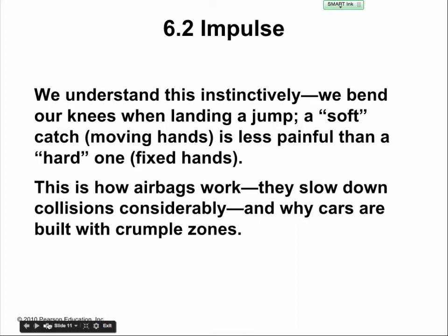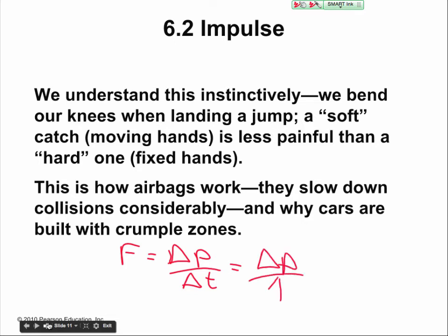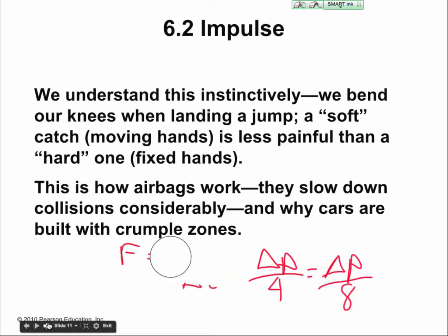Force equals delta P over delta T. When I increase the time, it reduces the force. Whatever delta P is, if I go from delta P over 4 and change that denominator to 8, this is a lot lower — the denominator is a greater value, so I'm lowering that impact force of the ball when I catch it by slowing it down over more time.